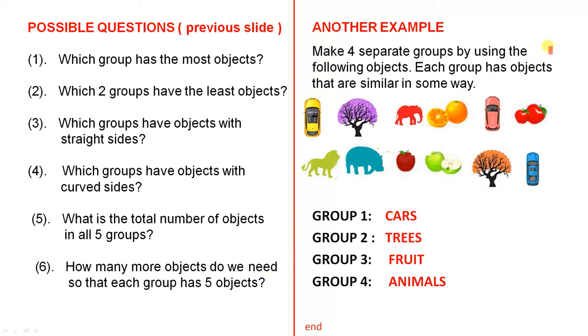And here's another example. Make four separate groups by using the following objects. Each group has objects that are similar in some way. Now here are all the objects here. And when the students look very carefully, they'll see that one group has cars. Another group would have trees. Another group would have fruit. And another group would have animals. And then they would put all the objects or the pictures in the different groups.